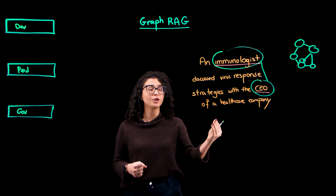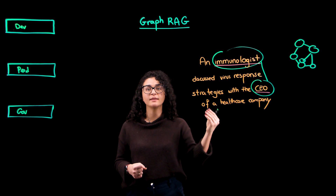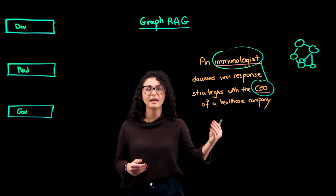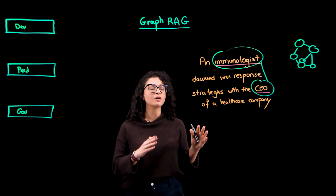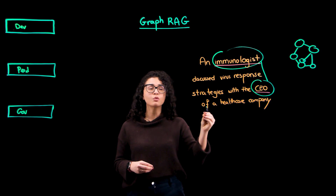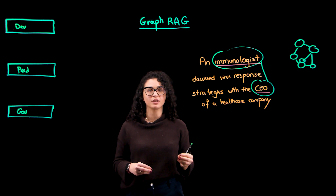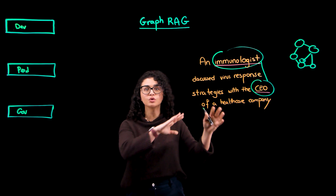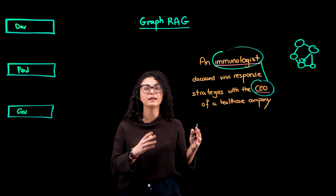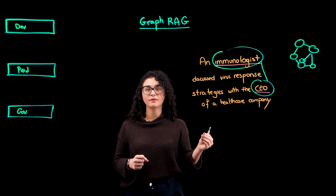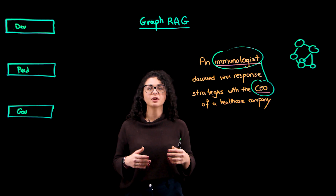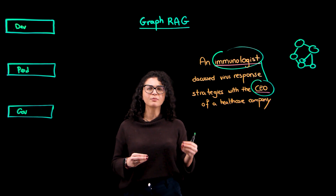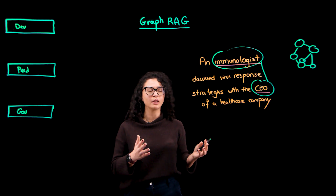GraphRAG recognizes that the immunologist is deeply connected to immunology and medical research, whereas the CEO has a more indirect yet related connection through her leadership at the healthcare company. This analysis goes beyond simply noting co-occurrences — the LLM quantifies the strength and nature of these relationships, enabling the construction of weighted graphs that reveal insightful patterns. Transforming data into a knowledge graph creates a network of connected, linked entities that supports a wide range of applications, from generating targeted questions to crafting rich, contextually relevant summaries — providing a depth of insight that traditional RAG cannot achieve alone.